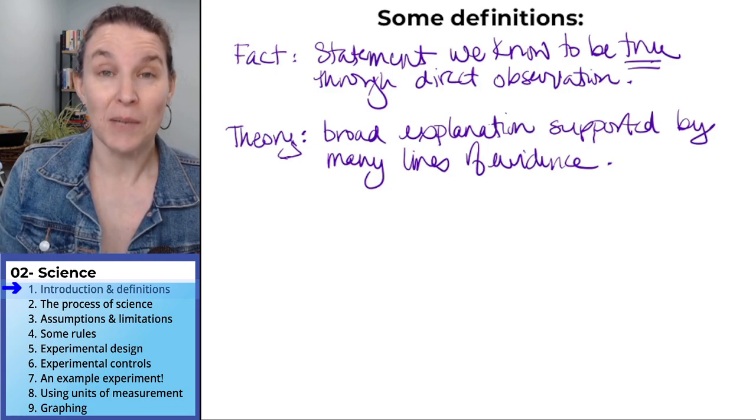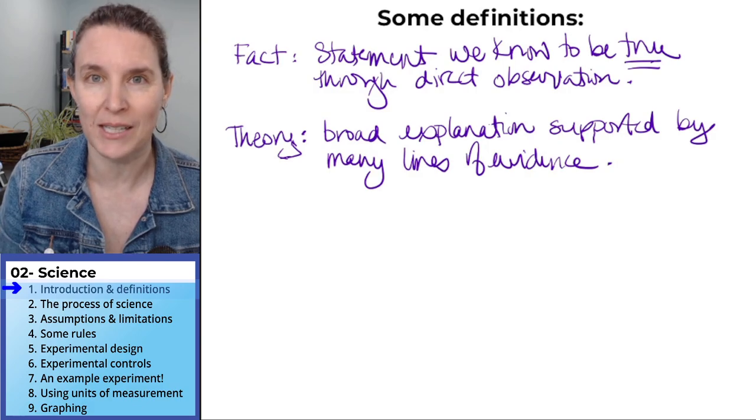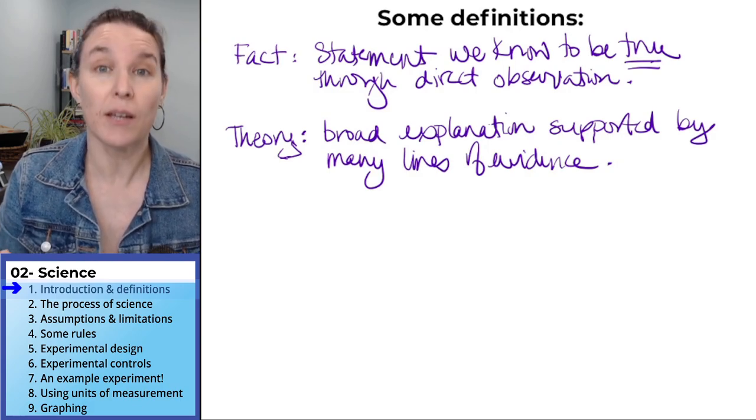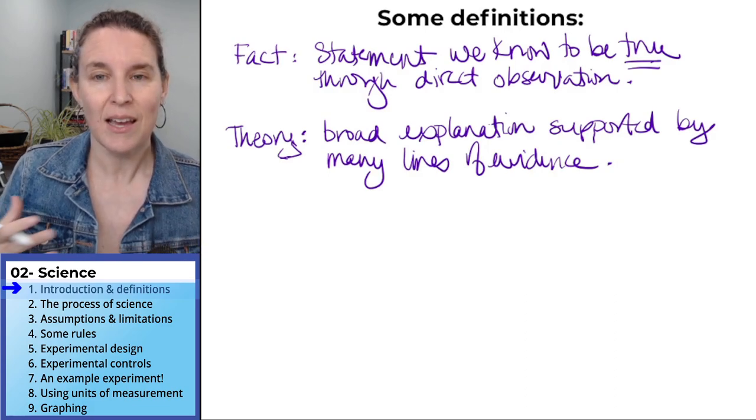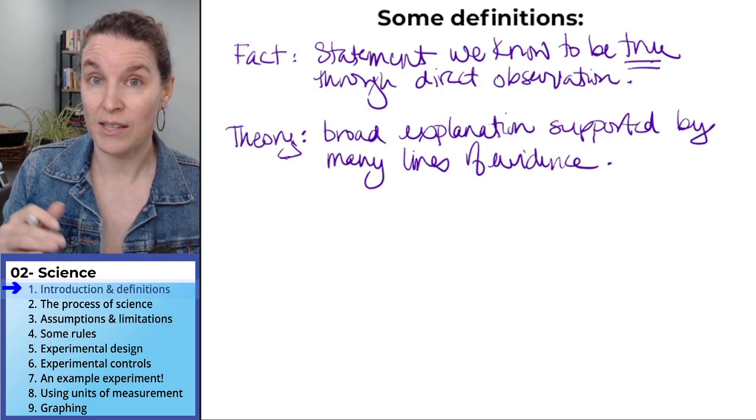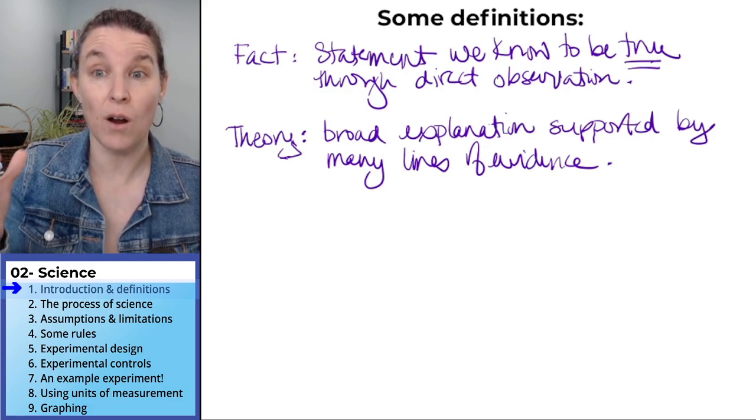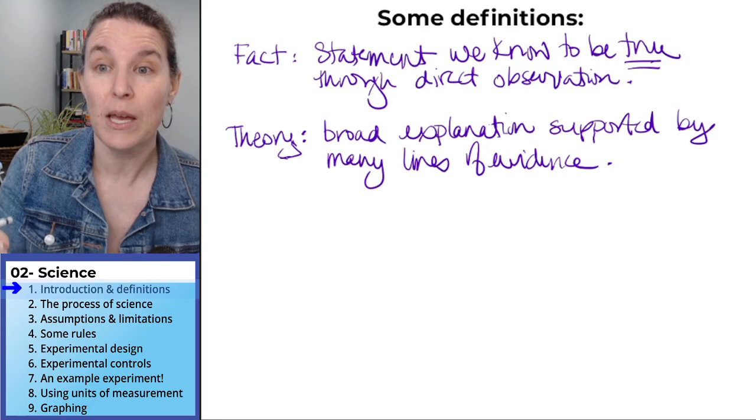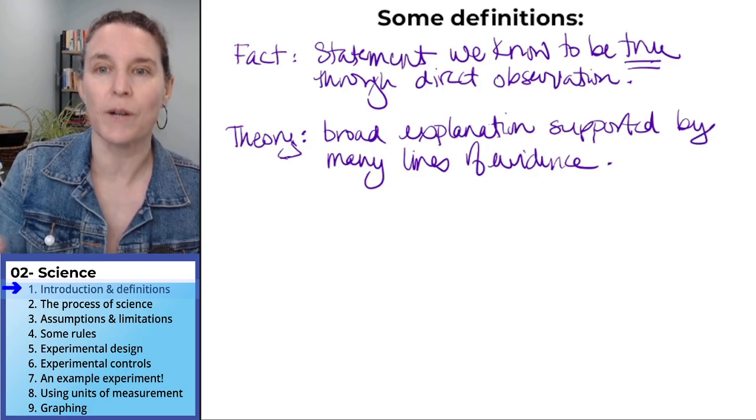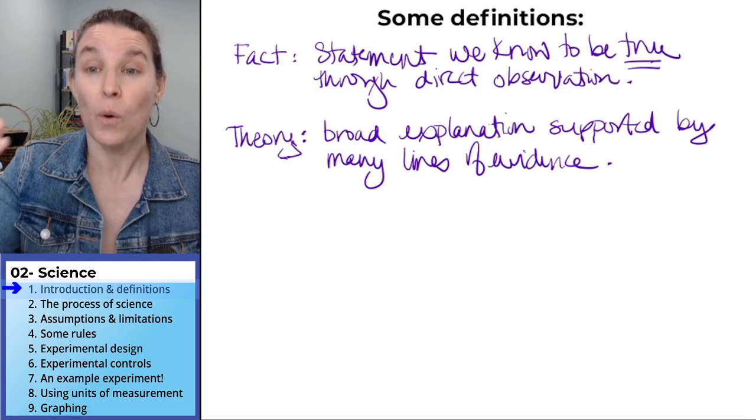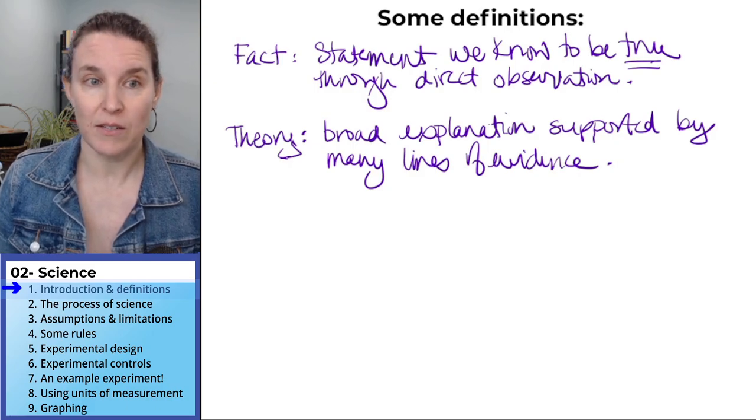It's disappointing to me that there is a difference in how the word fact may be used commonly. That's new. With the advent of alternative facts, I want to be very clear that in this class that there really aren't alternative facts. There are things we know are true based on direct observation and that's how we're going to use the word. Just like in this class, when we talk about a theory, we're going to talk about a broad explanation supported by many lines of evidence.